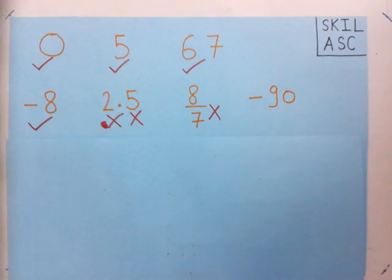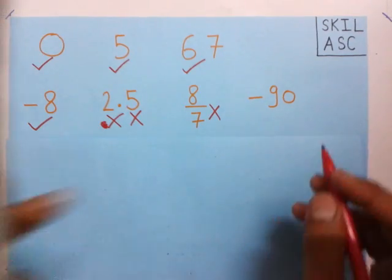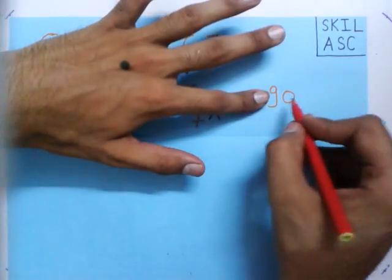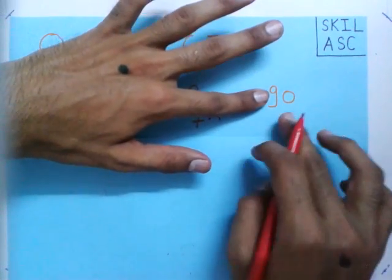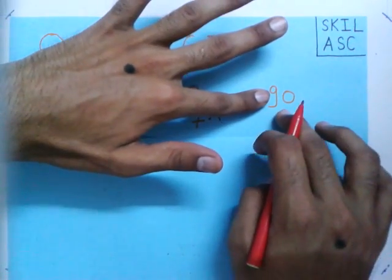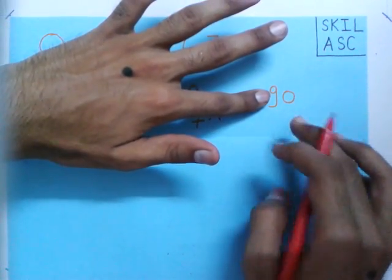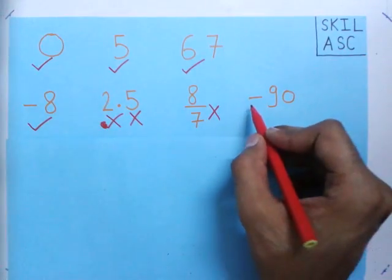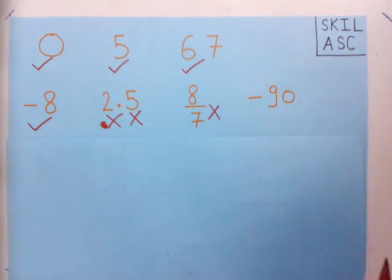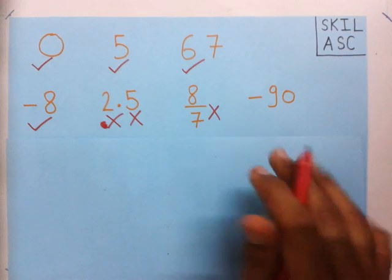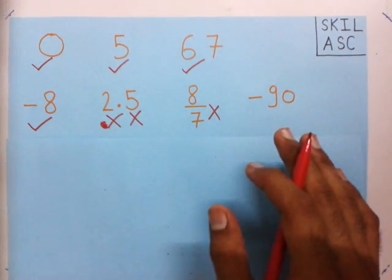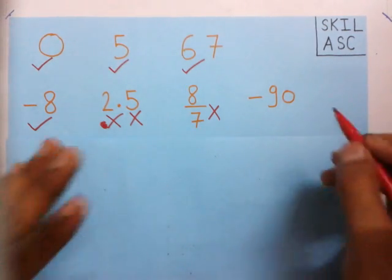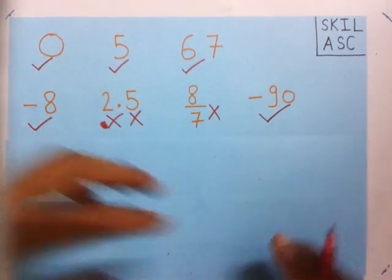Now we see minus 90. If we look at only 90, this is a number used while counting. Now I have put a negative sign to it, so it becomes minus 90. We know that the negative of a number used for counting is an integer, so minus 90 is an integer.